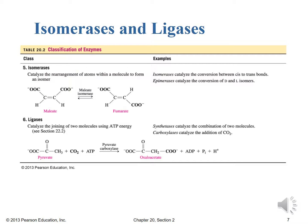Our last classes of enzymes from table 20.2. We have our isomerases and our ligases. So we have the isomerases which catalyze the rearrangement of atoms within a molecule to form an isomer. So isomerases catalyze the conversion between cis to trans bonds. Where epimerases catalyze the conversion of D to L isomers.